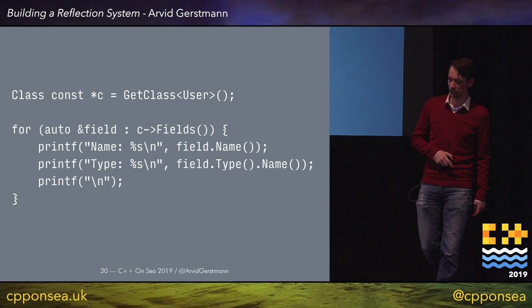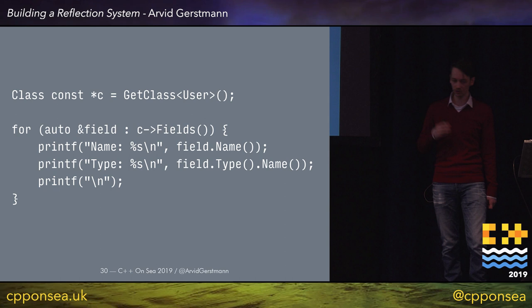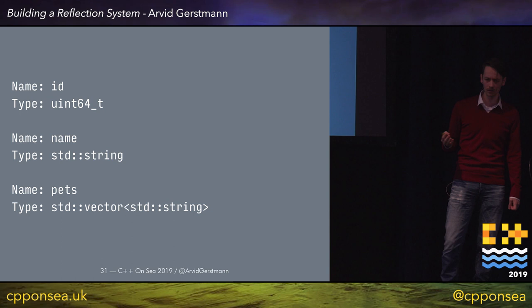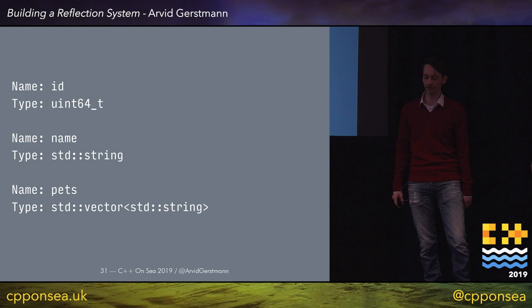Once we've done that, we come back to the previous code we've written. With get_class now implemented, this code compiles. We get access to the fields, can iterate over them, and print all the relevant information. When we run it, we get almost exactly the same output as in C#. The only difference is the type names — now representing C++ names: uint64, std::string, and std::vector<std::string>. Now we have all the information we need.